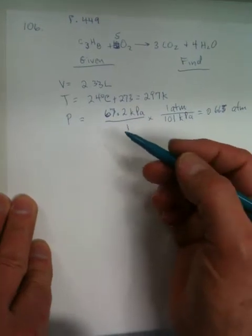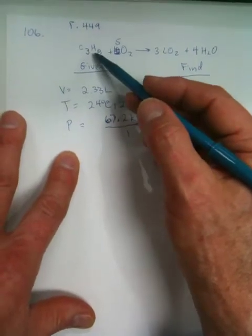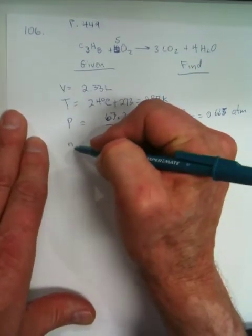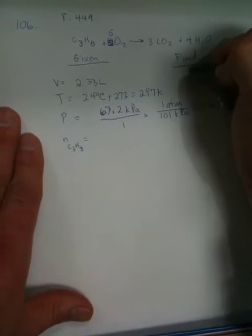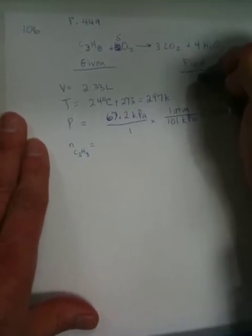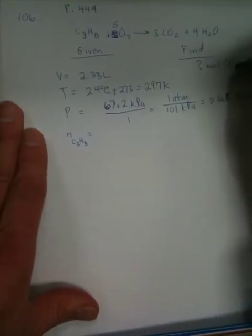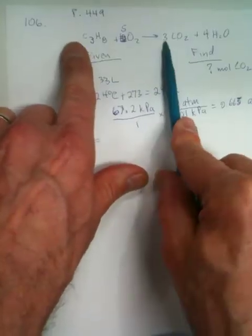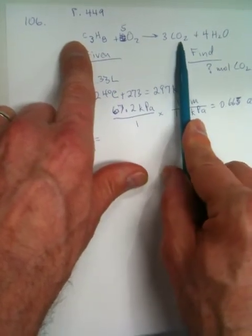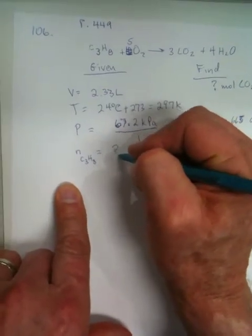All right, so now we can go ahead and solve for N, but guess what N is? They told us that we have propane gas, so this is the N of the propane, which is C3H8. All right, now the find, the find is to get moles of what? CO2. That's why we need this, because we're going to get a mole ratio here between the propane and the carbon dioxide, and that's going to be how we get from these moles to moles of carbon dioxide. But we've got to run PVNRT first, and this is our question mark.